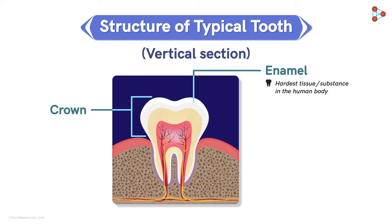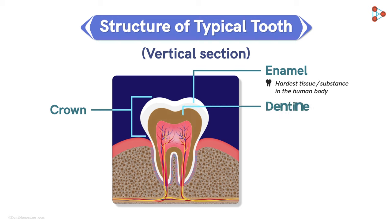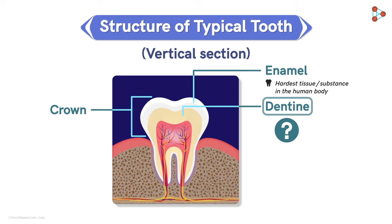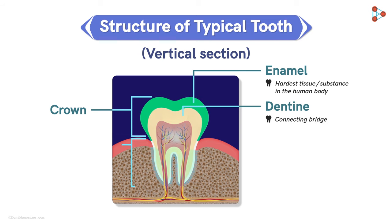The next layer after enamel is also extremely hard. This layer is called the dentine. As we can see here, the dentine mainly acts as a connecting bridge between the crown on top and the root lying below it.